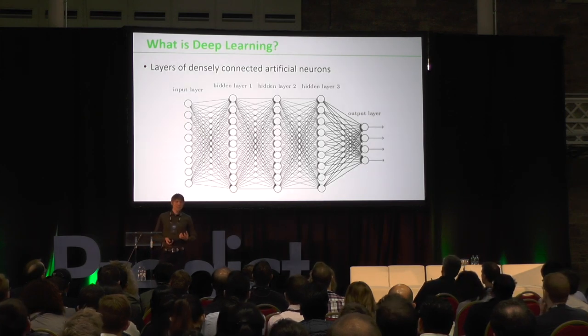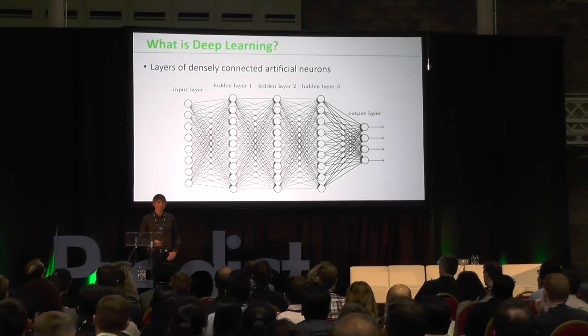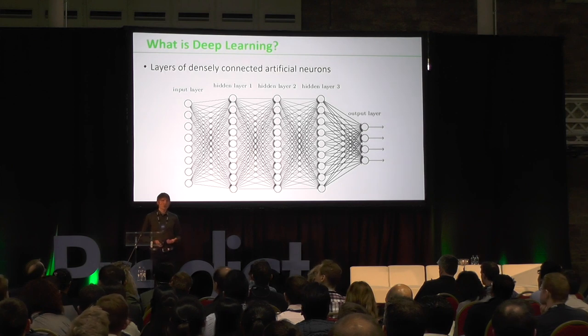What deep learning really is: the architecture consists of multiple layers of densely connected artificial neurons. Each neuron is a very small, quite simple processing component that takes an input and produces a corresponding output. But when you have millions of these neurons connected together in very dense, complicated ways, they produce quite sophisticated behaviours built from these simple components. These architectures are usually organised into a number of different layers — hence the analogy for 'deep layers' and deep learning.